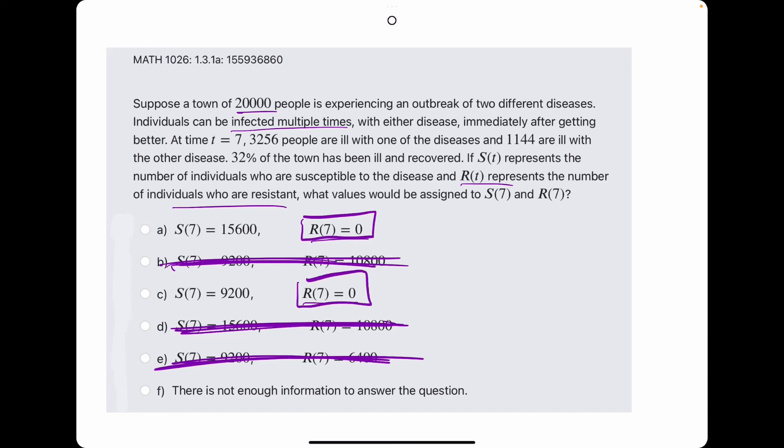So, between A or C, we are finding the number of susceptible individuals. So, always starting with the total, always subtracting the number of people who are currently ill with either disease. So, 3,256 and 1,144.